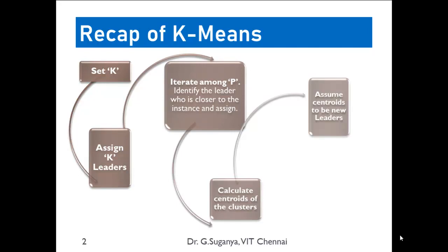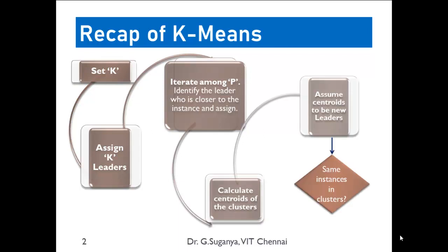With these new leaders, again you have to identify which instances are closer to these centroids and repeat the process for the entire dataset. If you find the instance assignments to be the same in this iteration as in the previous epoch, you can stop, stating that those are the identified clusters. Or else you have to go back and repeat the same using the new centroid clusters. This process continues until the clusters remain the same in subsequent epochs, or you can stop after a specified number of iterations — say 10 iterations.